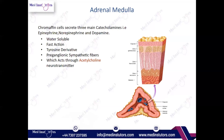Now we have covered the adrenal cortex — zona glomerulosa with aldosterone, zona fasciculata with cortisol, and zona reticularis with androgens through steroidogenesis. Now let's talk about the adrenal medulla. If you look carefully at the medulla, it contains specialized cells called chromaffin cells — cuboidal cells. Chromaffin cells are important because tumors may form here.